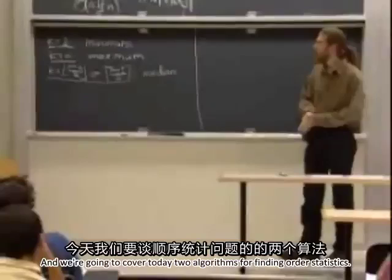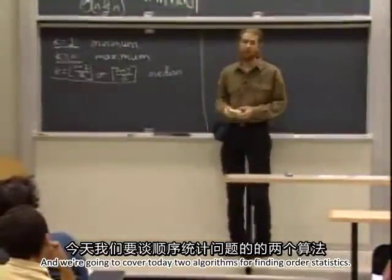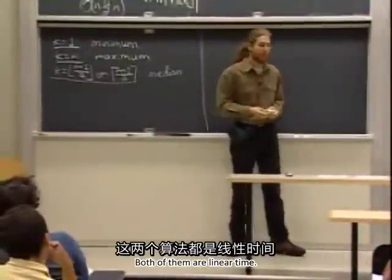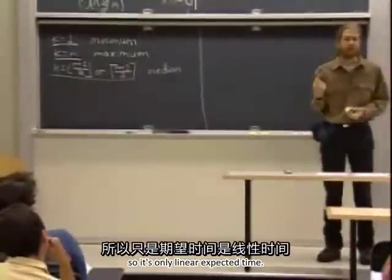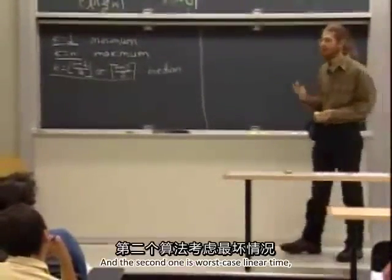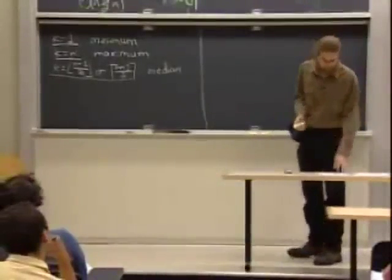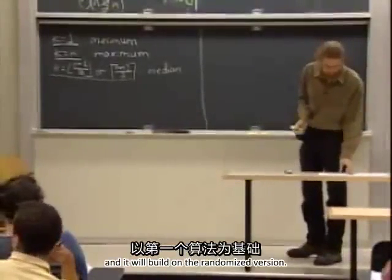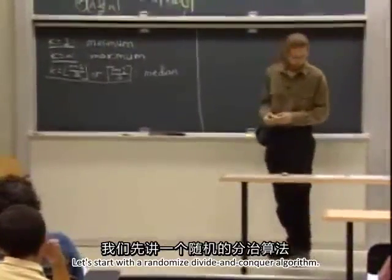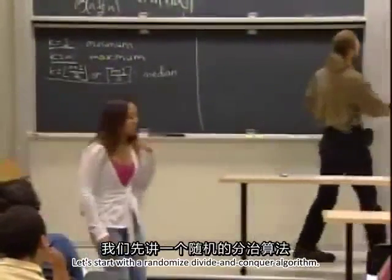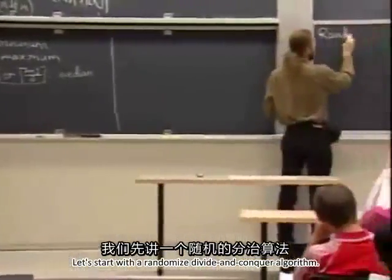We're going to cover today two algorithms for finding order statistics. Both of them are linear time. The first one is randomized, so it's only linear expected time. The second one is worst-case linear time, and it will build on the randomized version. Let's start with a randomized divide-and-conquer algorithm.